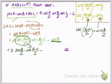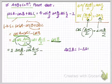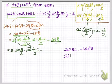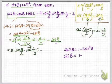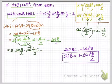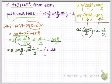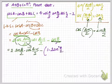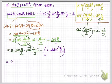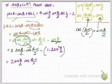For cos B, I'll apply the sub-multiple angle (double angle) formula: cos 2B = 1 − 2sin²(B/2), so cos B = 1 − 2sin²(B/2). Substituting, the expression becomes 2 sin(B/2) · cos((A−C)/2) − (1 − 2sin²(B/2)).